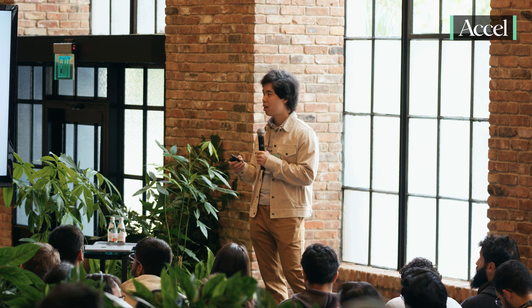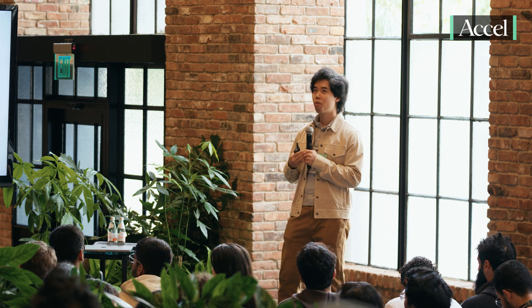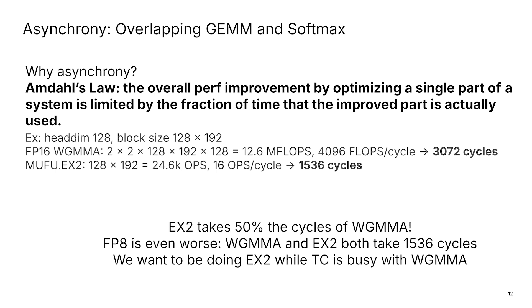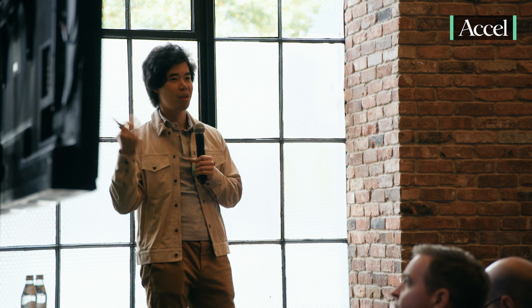This goes back to Amdahl's law, which says that the overall performance improvement by optimizing a single part of the system is limited by the fraction of time that improved part is actually used. If you work through the Flash Attention algorithm and count how many flops you need for matrix multiply and how many flops for softmax, you see that the matrix multiply flops is way higher than the softmax flops. But softmax requires this instruction called the exponential instruction — it uses this multifunction unit — and that multifunction unit has much, much lower throughput: hundreds of times lower throughput than the matrix multiply.